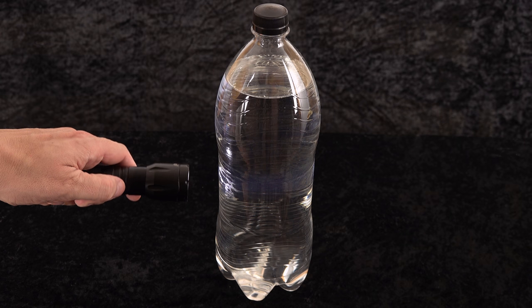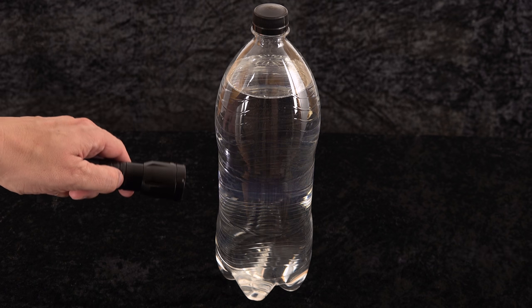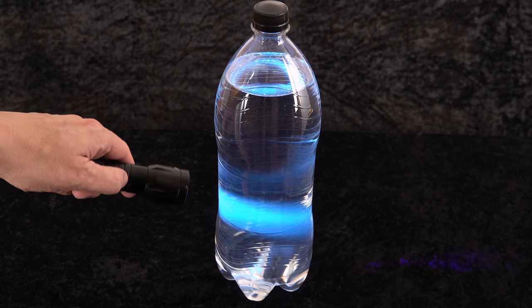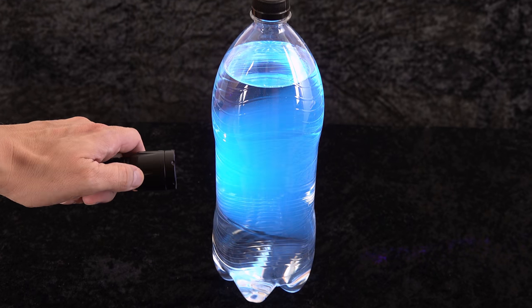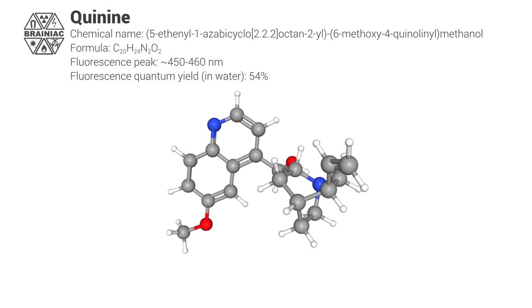Under normal light it is clear, transparent, and colorless. Like water. But under ultraviolet light this happens. It has a bright bluish fluorescence caused by quinine.